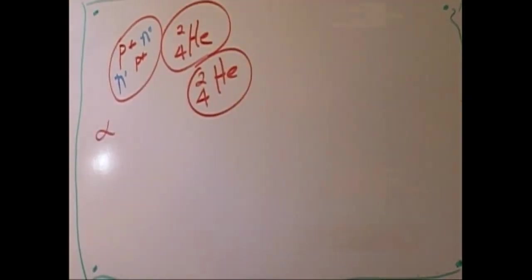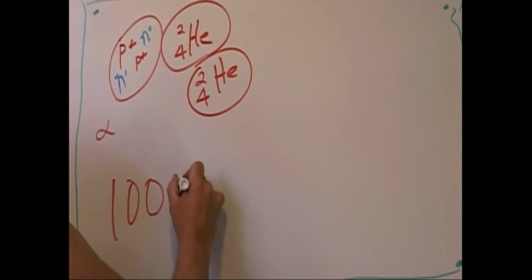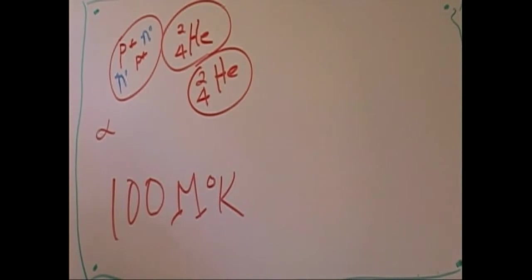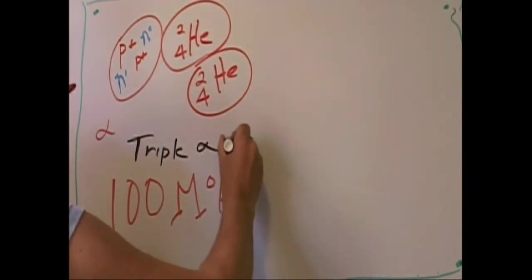This is something Hans Bethe proposed. At 100 million degrees, in giant red stars. They look cool on the outside because they're red but in the core at 100 million degrees is able to do something called the triple alpha process.